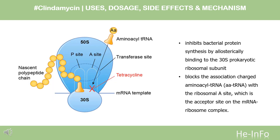Clindamycin inhibits bacterial protein synthesis by binding to the 23S RNA of the 50S subunit of the bacterial ribosome. It impedes both the assembly of the ribosome and the translation process. The molecular mechanism is thought to be due to clindamycin's three-dimensional structure, which closely resembles the three ends of L-prolyl-tRNA and deacylated-tRNA during the peptide elongation cycle, acting as a structural analog of these tRNA molecules. Clindamycin impairs peptide chain initiation and may stimulate dissociation of peptidyl-tRNA from bacterial ribosomes. The mechanism through which topical clindamycin treats acne vulgaris is unclear, but may be related to its activity against Propionibacterium acnes, a bacteria associated with acne.